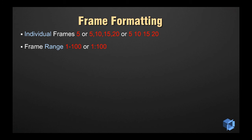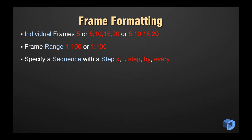A frame range can be specified by either using the hyphen or colon character. To specify a sequence with a step value in it, you have a number of choices for what can be used as the step character. Possible options are the x and colon characters, or the words step, by, or every.